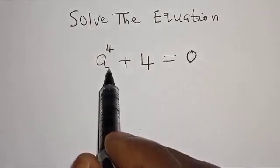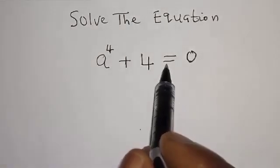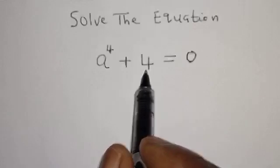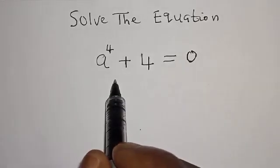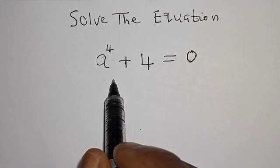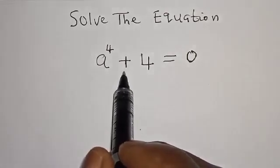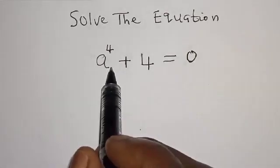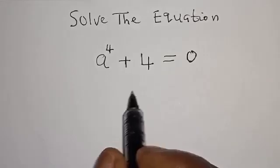Solve the equation a raised to the power of 4 plus 4 is equal to 0. Hi everyone, welcome to my class, the Olusta class, where we teach mathematics and statistics. In today's class, we quickly want to solve this given equation: a raised to the power of 4 plus 4 is equal to 0.